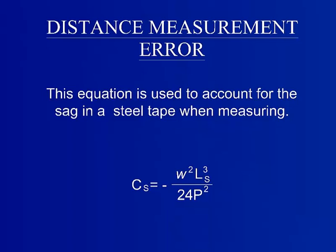Lastly, sag occurs when a steel tape is not supported along its entire length. The equation used to calculate the distance lost to sag is: the sag correction equals the weight of the tape squared multiplied by the length of the tape measured cubed divided by 24 times the tension squared. The negative sign in front of the equation is important because sag always lessens the actual distance measured.